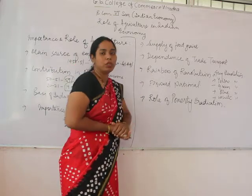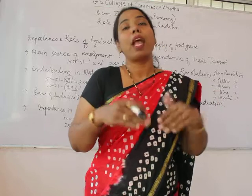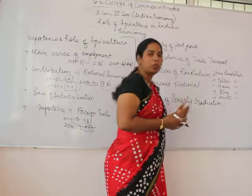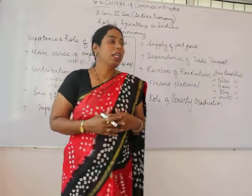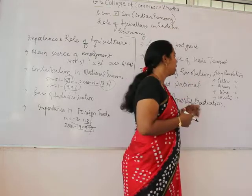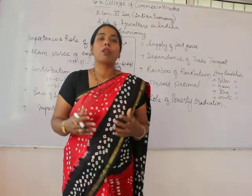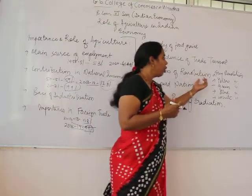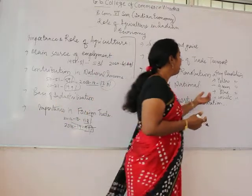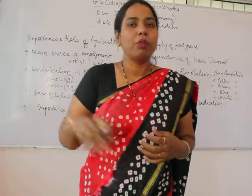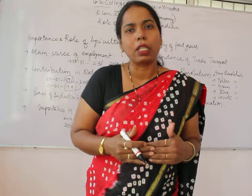The next aspect is the rainbow of revolutions. Agriculture contributes to different revolutions. The grey revolution is the revolution in terms of fertilizer productivity. The yellow revolution is the revolution in oil production, as different types of oils are produced in India because oil seeds are available here. The green revolution refers to the revolution of wheat production. The blue revolution is in the field of fishing, which is considered an allied sector of agriculture.